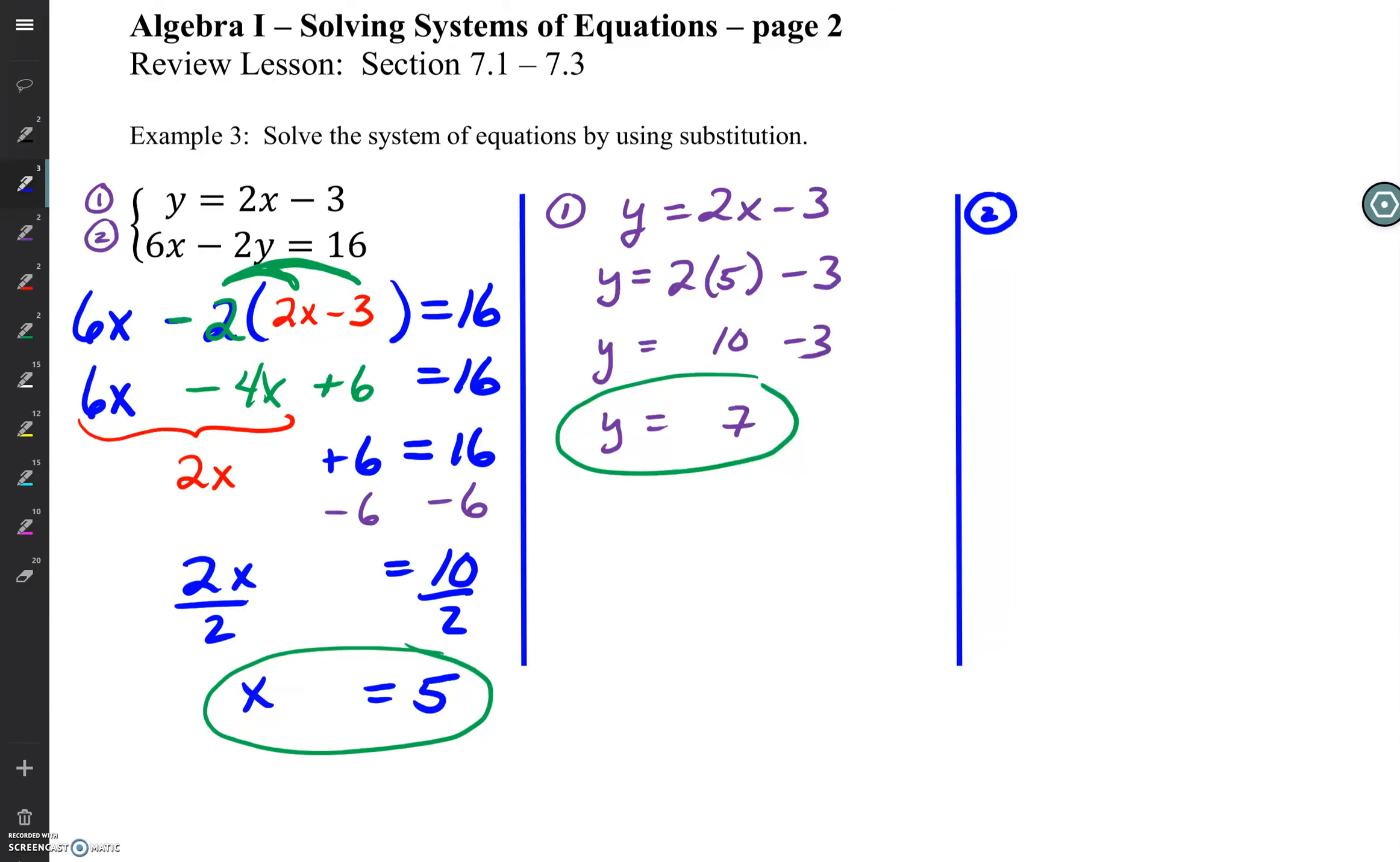If we're going to check this problem, we need to use the other equation to check it, which is 6x minus 2y equals 16. So let's plug our values in. 6 times 5, because that's the value of x. And y is 7, so 2 times 7 equals 16.